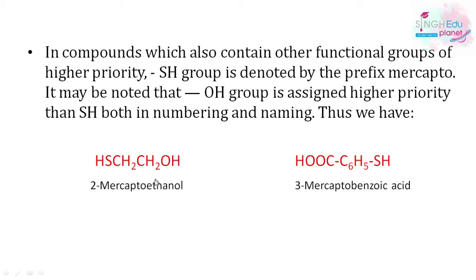For compounds with multiple functional groups, we assign priorities. The -SH group is denoted as 'mercapto' as a prefix, but -OH is given higher priority in both numbering and naming. For example, 2-mercaptoethanol: ethanol is given priority, and the -SH group at position 2 is named as mercapto. For a benzene ring with both -SH and -COOH groups, the carboxyl group is given preference; if -SH is at the third position, it is 3-mercaptobenzoic acid, and if at the fourth (para) position, it is 4-mercaptobenzoic acid.